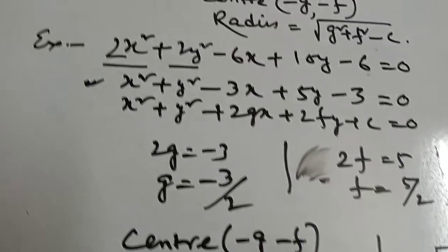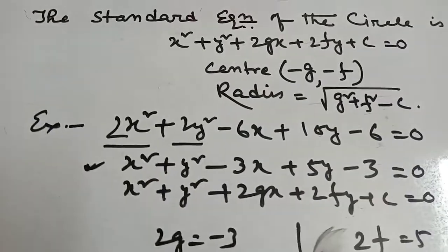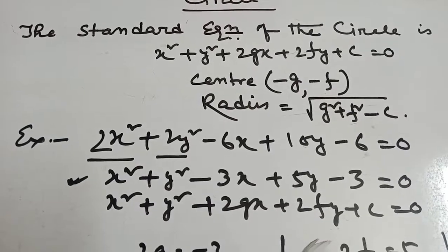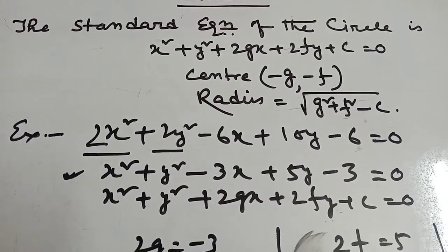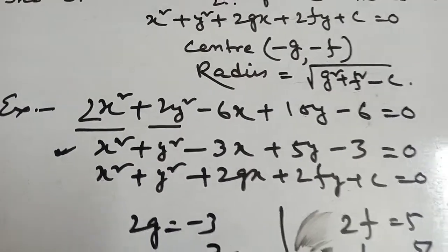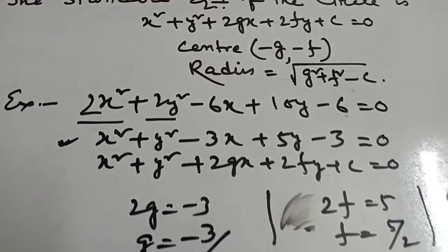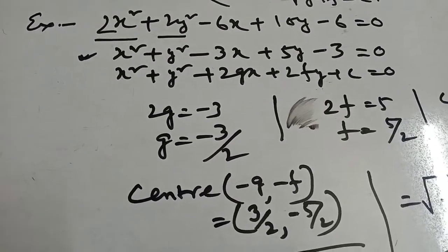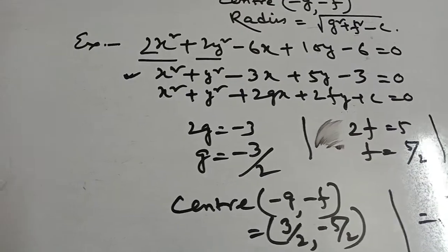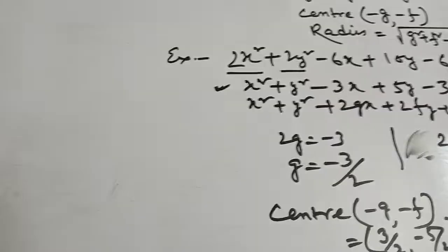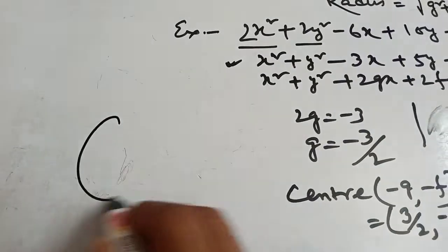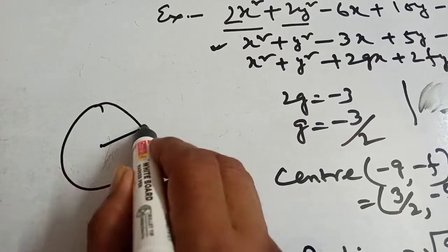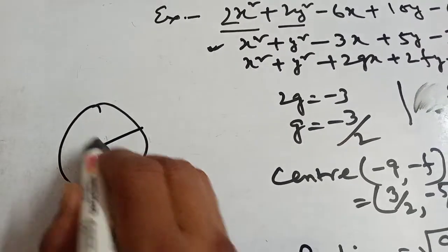So you must remember the standard equation of a circle: x² + y² + 2gx + 2fy + c = 0. By this formula you can find the center and radius of the circle — the center is (−g, −f) and the radius is √(g² + f² − c).